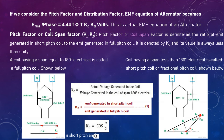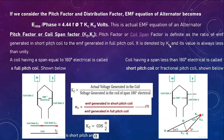Pitch factor or coil span factor is defined as the ratio of EMF generated in a short pitch coil to the EMF generated in a full pitch coil. It is given as: actual voltage generated in the coil divided by voltage generated in a coil span of 180 degrees electrical. It is denoted as Kc or Kp depending on the textbook. Its value is always less than unity. In armature winding, one end of the conductor starts at the north pole and the other end ends at the south pole.